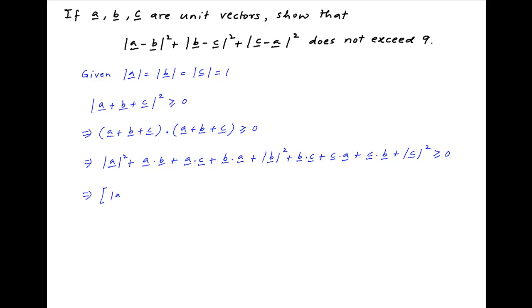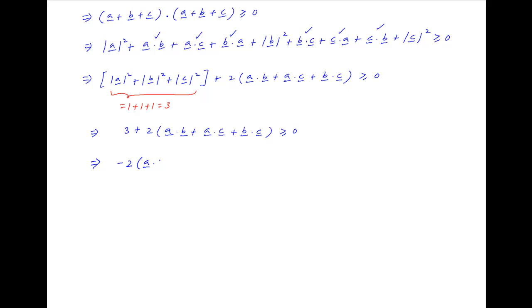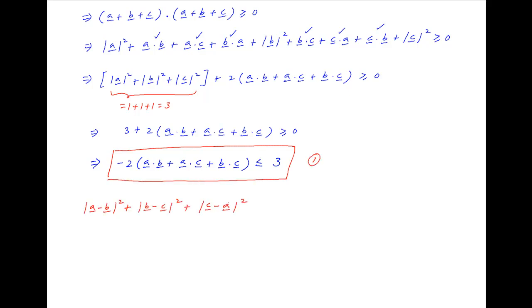This can be rewritten as |a|² + |b|² + |c|² + 2(a·b + a·c + b·c) ≥ 0. Since the absolute values of vectors a, b, and c equal 1, the first three terms add up to 3, giving: 3 + 2(a·b + a·c + b·c) ≥ 0. This implies that −2(a·b + a·c + b·c) ≤ 3. Let's call this Result 1.